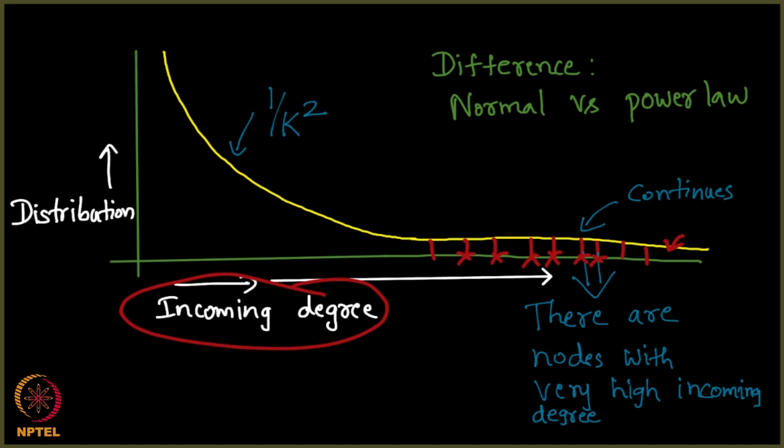The power law simply says that the curve extends beyond a stage and it sort of is close to the x axis although it does not become equal to x axis, it goes on which means that it shows us of the existence of nodes that have very high incoming degree.